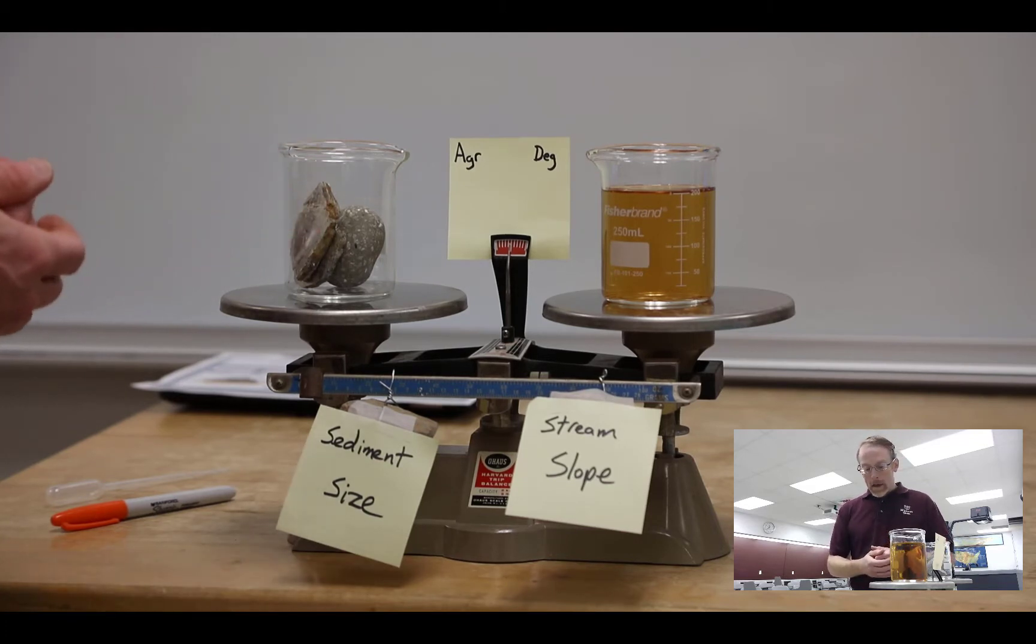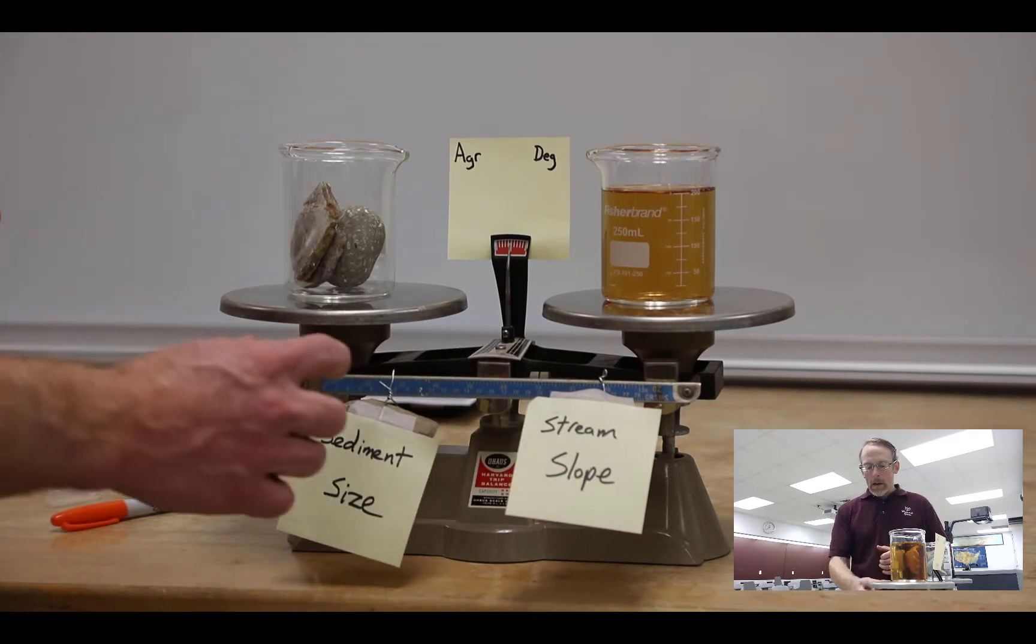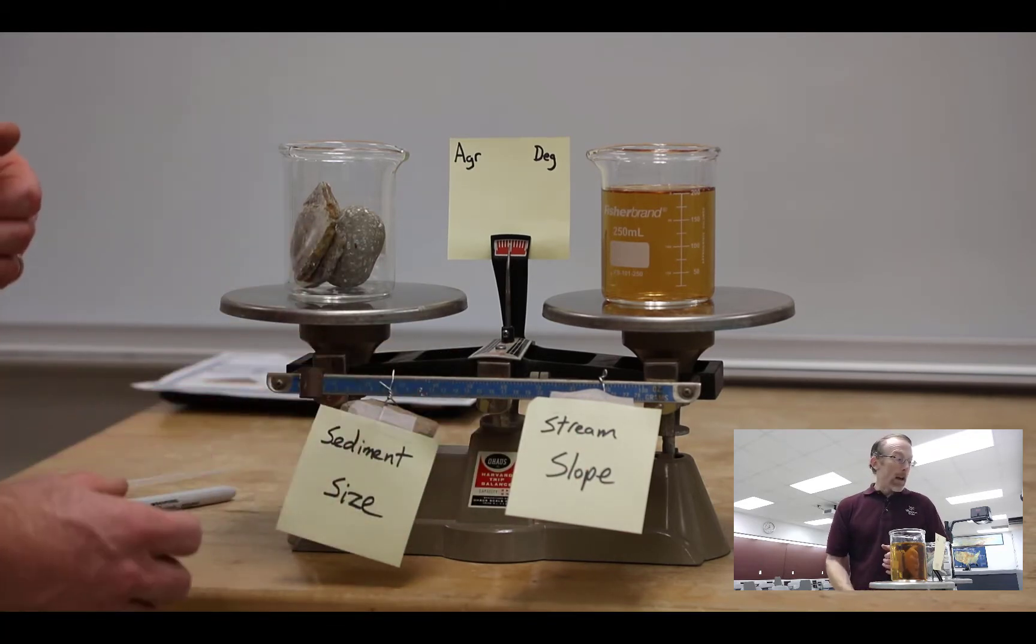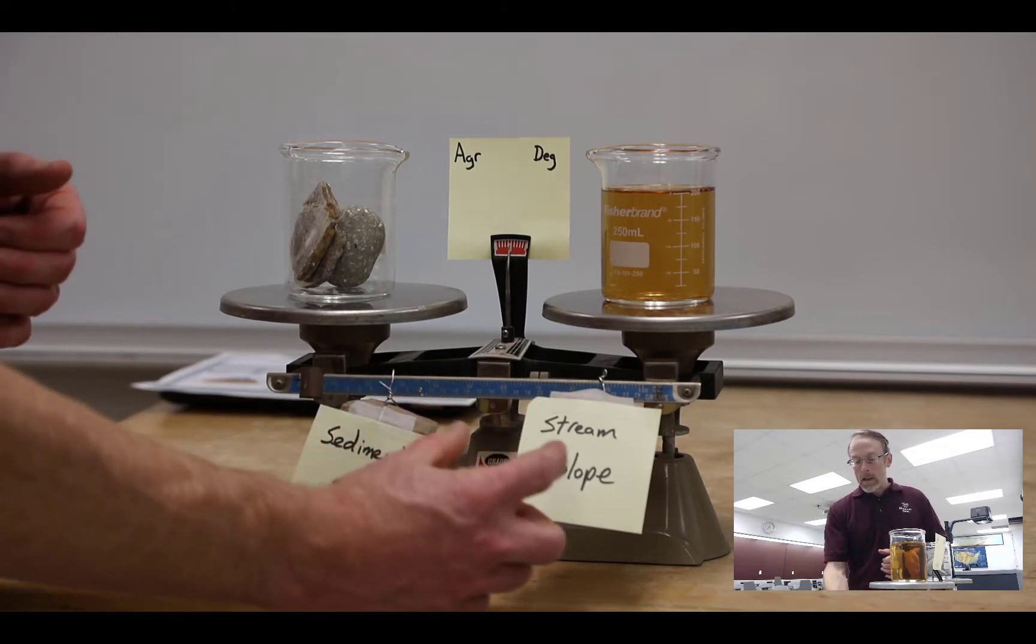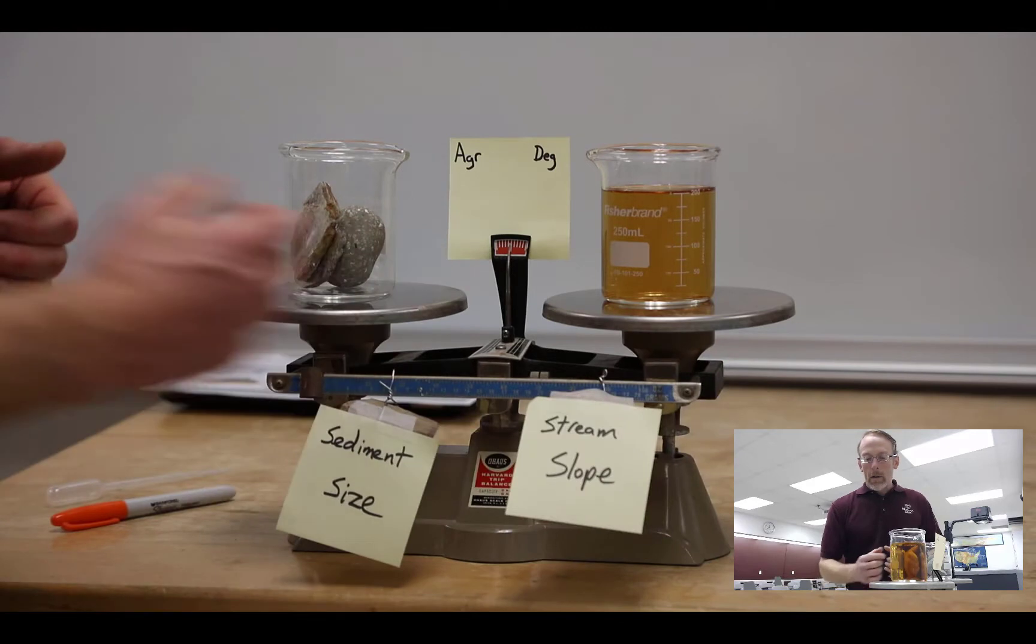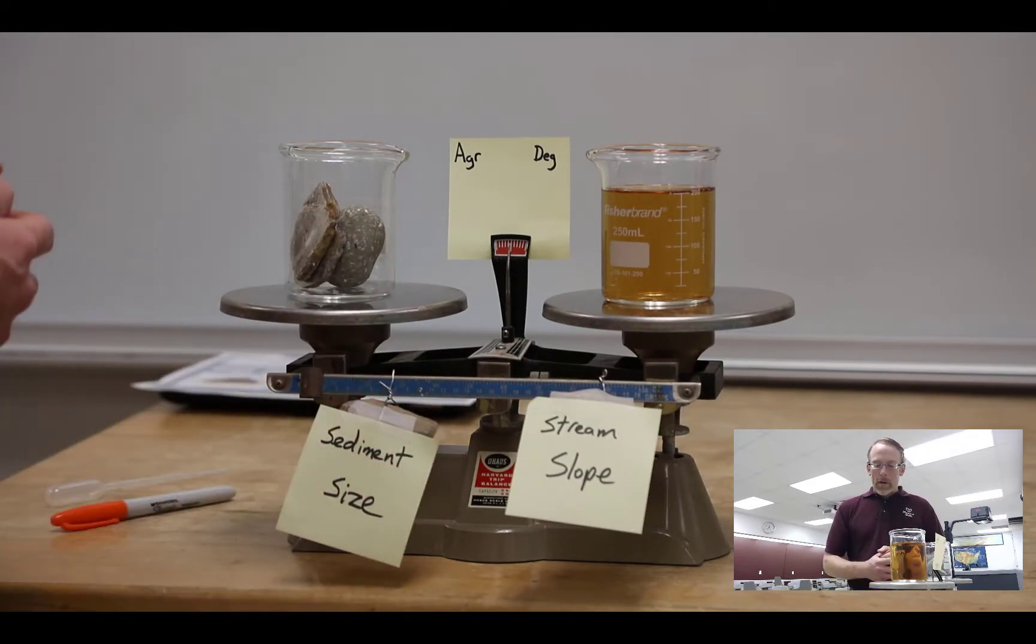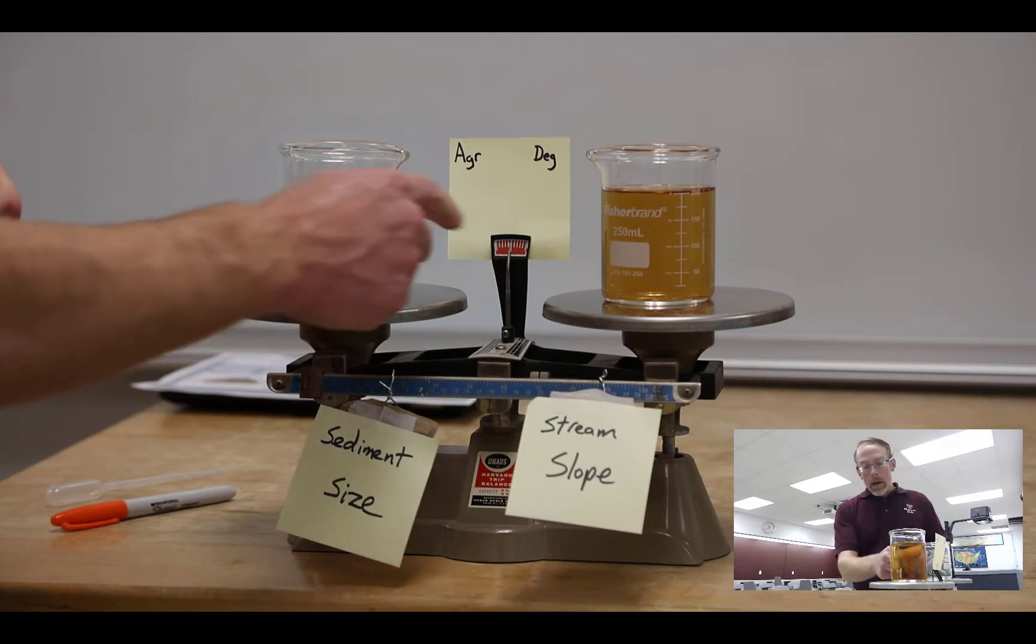Then we've got our sediment size and stream slope variables represented down here. We can move those left or right. If we want to make our stream slope steeper, we would move the variable out this way. If we wanted to make our sediment size coarser, we'd move that variable this way.